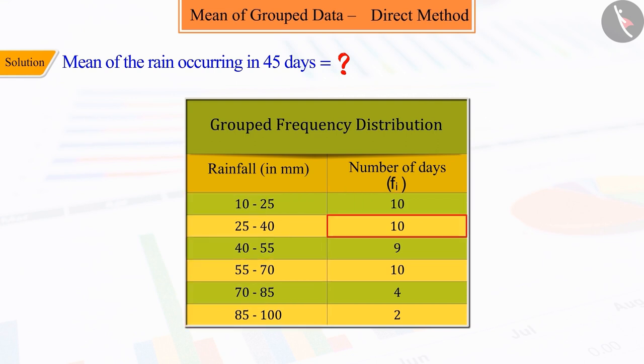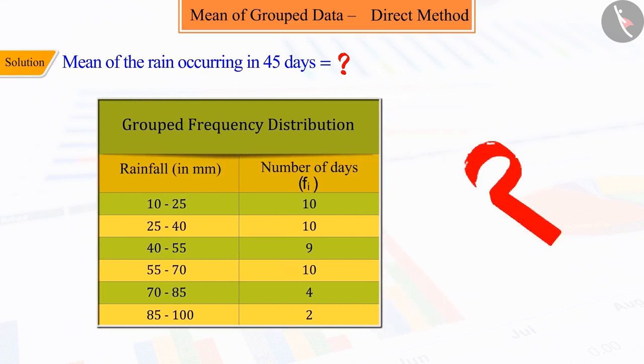that is, f_i, which is shown in the following table. So now, can you find the mean with the help of this table?